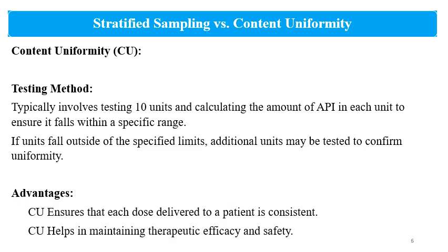Content Uniformity typically involves testing 10 units and calculating the amount of API in each unit to ensure it falls within a specific range. If units fall outside the specified limits, additional units may be tested to confirm uniformity. First, 10 units are tested; if the AV value is not within specified limits, another 20 units are tested and the AV value is recalculated. CU ensures each dose delivered to the patient is consistent, and also helps in maintaining therapeutic efficacy and safety.